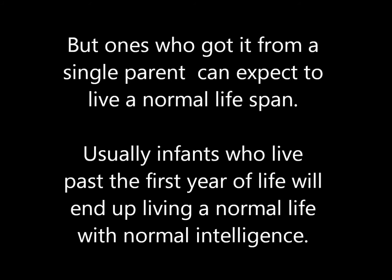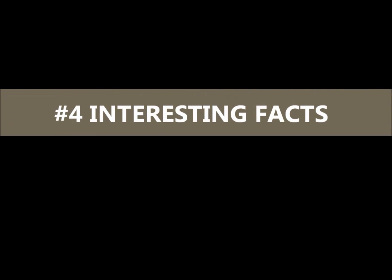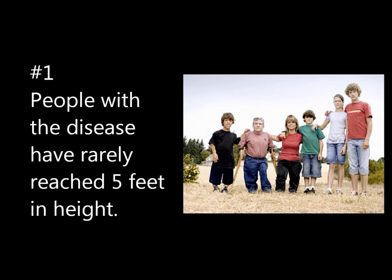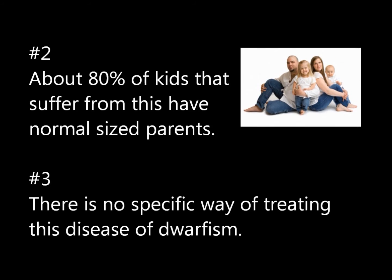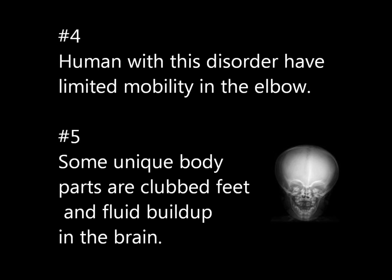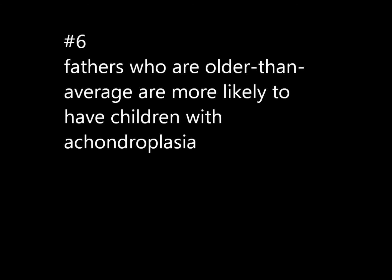Infants who live past the first year of life will typically end up living a normal life with normal intelligence. People with this disease have rarely reached 5 feet in height. About 80% of kids with this disease have normal-sized parents. There is no specific way of treating this disease. Humans with this disorder have limited mobility in the elbow, and some may have clubbed feet and fluid buildup in the brain. Fathers who are older than average are more likely to have children with achondroplasia.